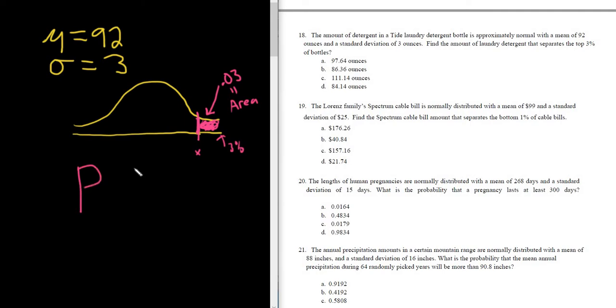We know that the probability that x, I'm going to use a big X here, so these are different x's, the probability that x is greater than or equal to this number, whatever this number is, is going to be equal to 0.03. So we're looking for the number that separates the top 3% from everything else.